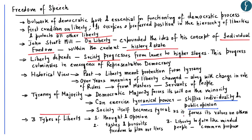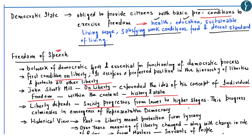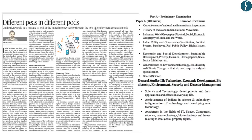As per the Indian Constitution, the idea of freedom and liberty is also constrained by reasonable restrictions provided by the state. From the context of freedom, liberty and state welfare programs, this article highlights that a democratic state is obliged to provide citizens with the basic preconditions for the exercise of freedom. These basic preconditions are health, education, sustainable living wage, satisfying work conditions, food and a decent standard of living. This article is important to understand the balance between freedom, liberty and government welfare schemes.